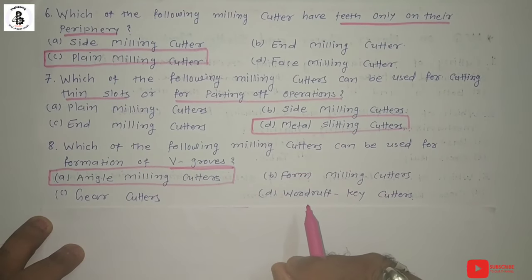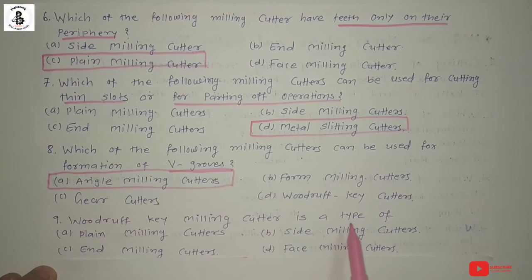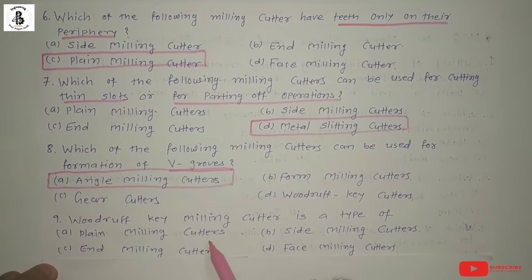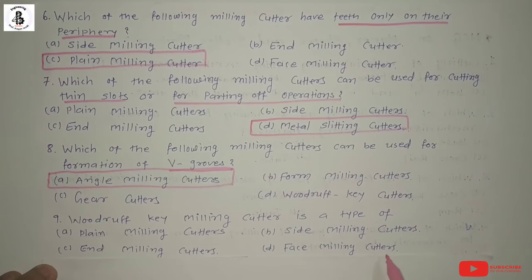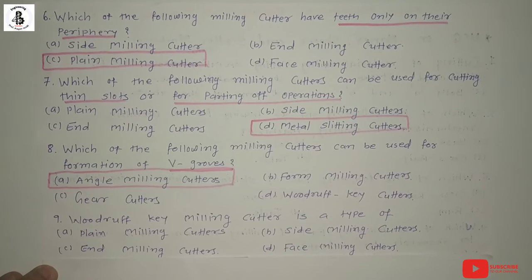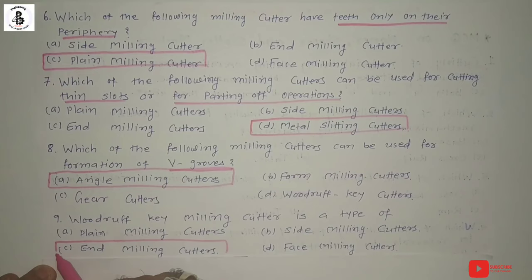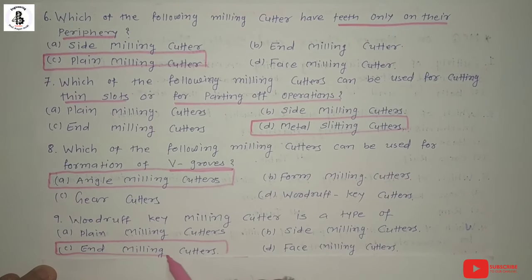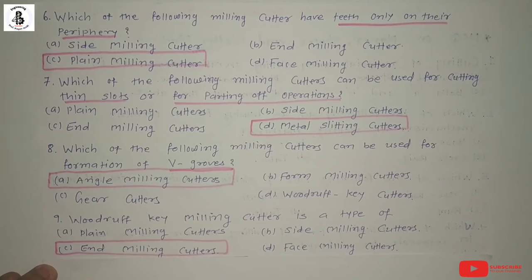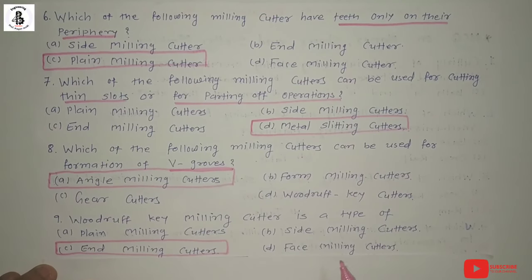Next: Woodruff key milling cutter is a type of — option A: plain milling cutters, option B: side milling cutters, option C: end milling cutters, option D: face milling cutters. Woodruff key milling cutters are generally a category of end milling cutters. At the end of the tool, there is a special arrangement of cutting edges for making Woodruff key slots. So the right answer is option C: end milling cutters.